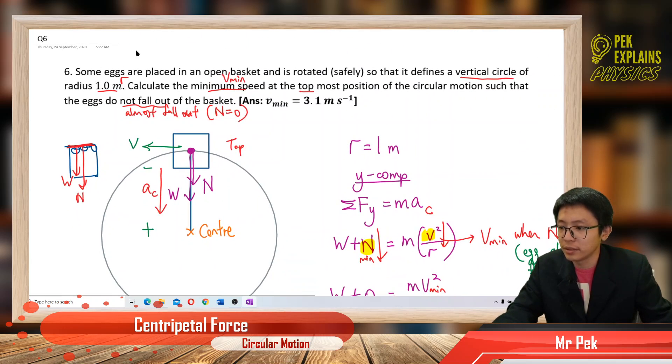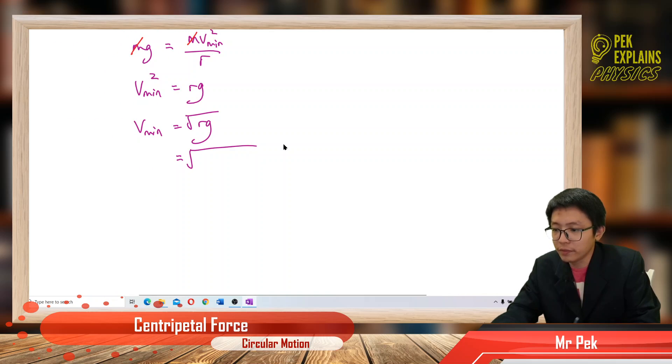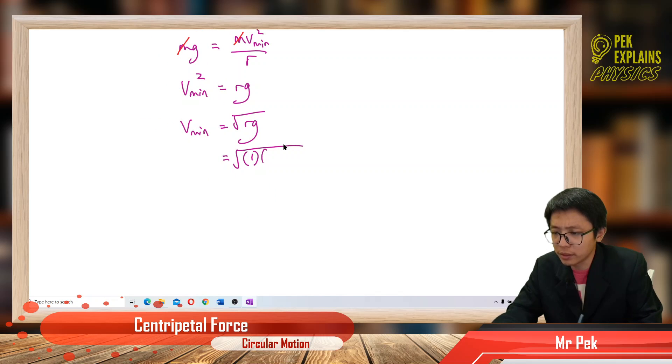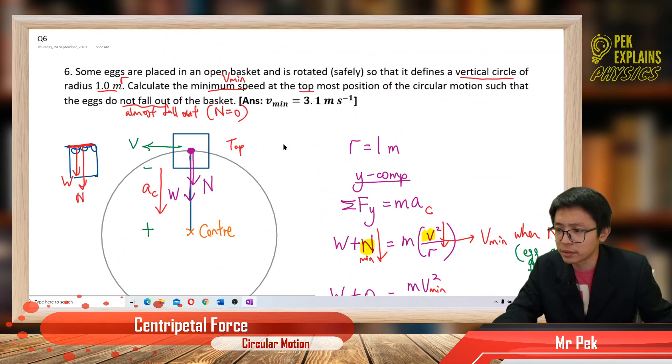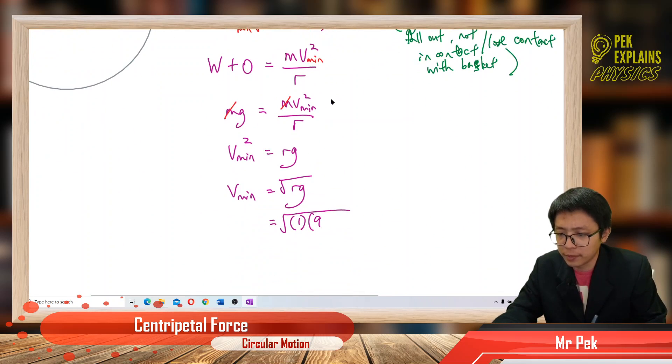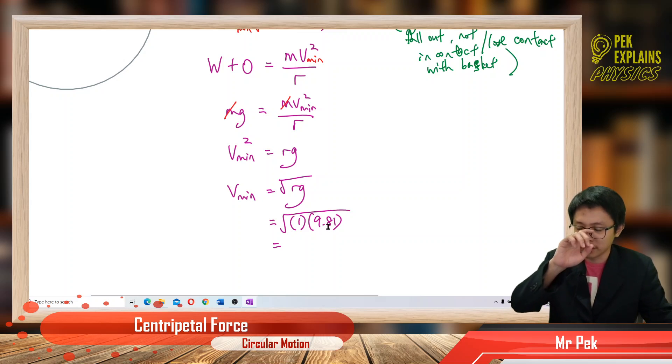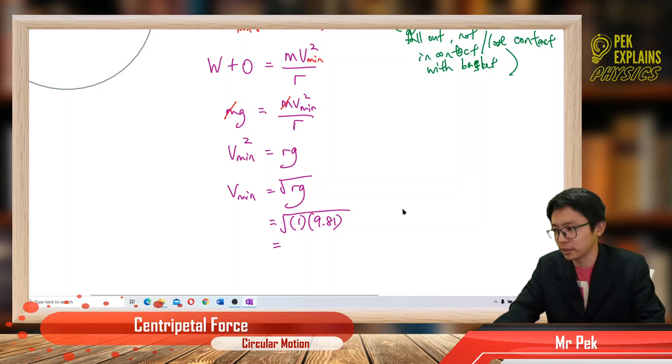So we have the radius is one meter, radius one meter. So g value is, it didn't specify, so g value just put 9.81. You must be careful what value of g specified. Sometimes you specify g equal to 10. If g equal to 10 you must put 10, don't put 9.81. Look whether it's specify g or not. If no specify means 9.81. So the minimum speed is 3.13 meter per second.